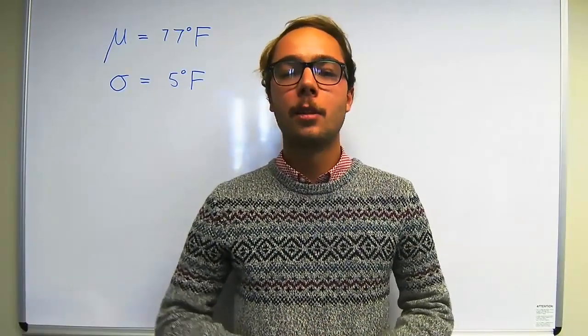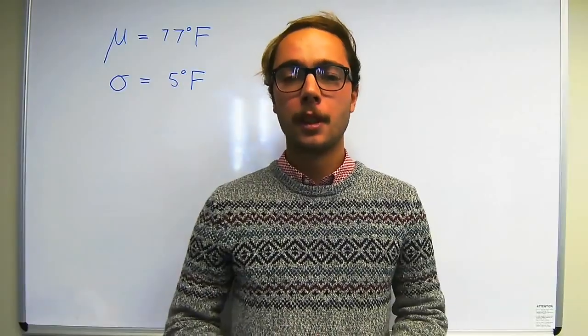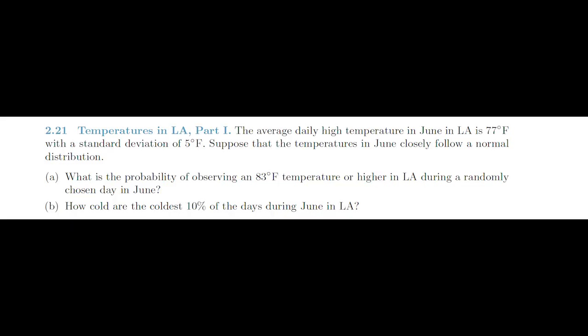In this video we will be discussing exercise 2.21 in the prescribed textbook. The question says the average daily high temperature in June in LA is 77 degrees Fahrenheit with a standard deviation of 5 degrees Fahrenheit. Suppose that the temperatures in June closely follow a normal distribution.